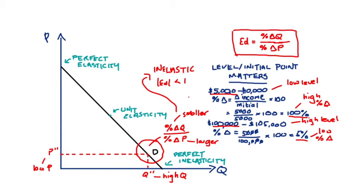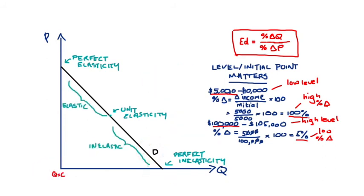The absolute value of elasticity in this section will be less than one, since our denominator is greater than our numerator. If we include the negative, the elasticity will lie between negative one and zero. Using this logic, we can see that the elasticity of points on the demand curve gradually decreases as we increase Q, becoming less elastic and then inelastic as we move down the curve, due to increasing quantity and decreasing price.